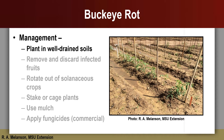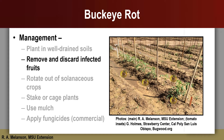Buckeye rot in tomatoes can be managed by practicing a number of disease management methods. First, plant in well-drained soils. Choose a site that drains well or make modifications to the intended planting site that help to improve drainage. During and after the growing season, remove and discard infected fruits from plants and gardens. Leaving infected fruits in the garden allows the pathogens to continue to grow and increase in number. Eventually, these pathogens make their way back into the soil where they can persist into future growing seasons to infect susceptible hosts and cause disease when conditions are favorable.